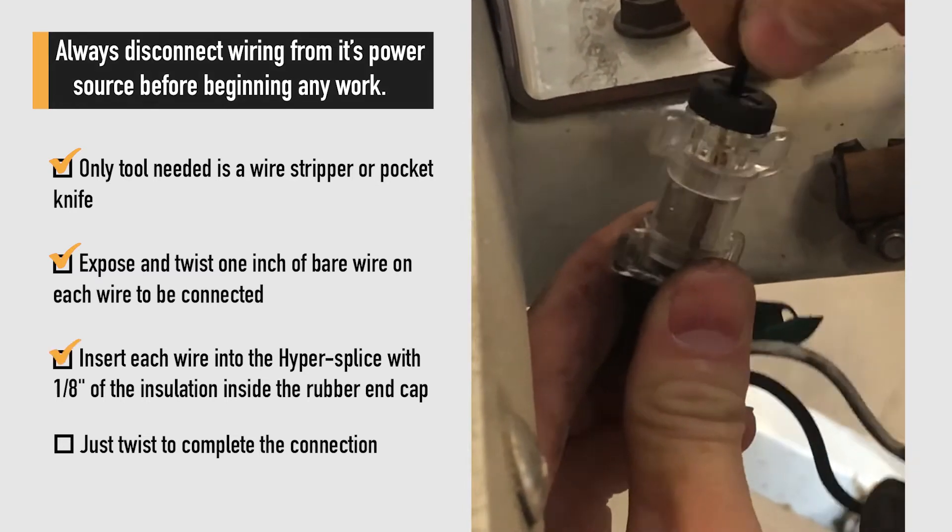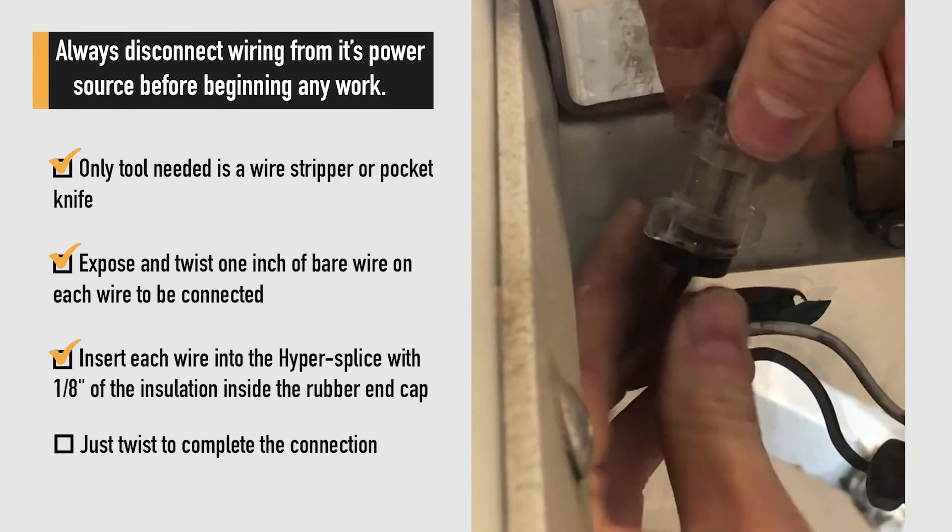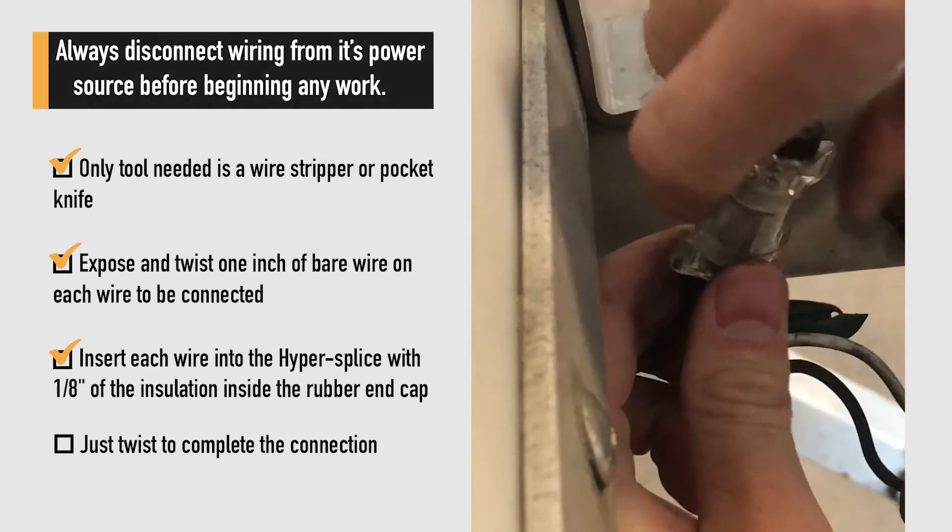Once both wires are fully inserted and no bare metal is visible on the outside of the Hypersplice, we're ready to twist.